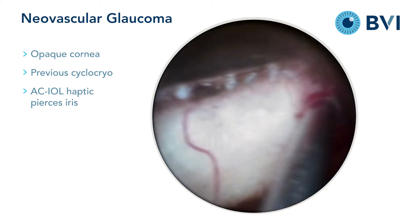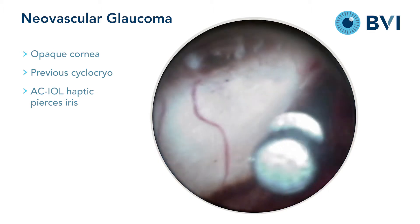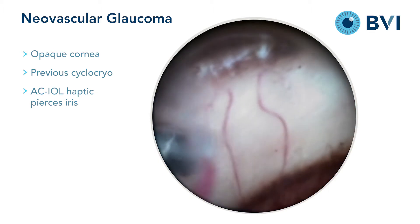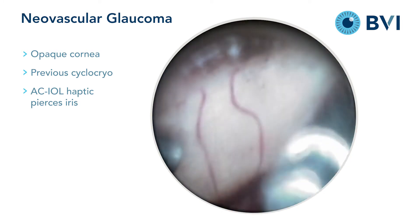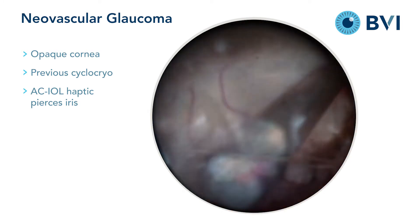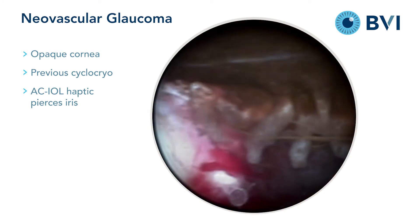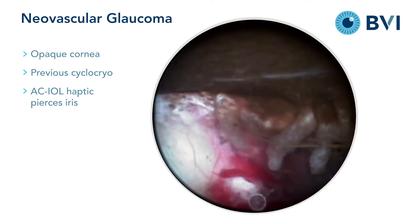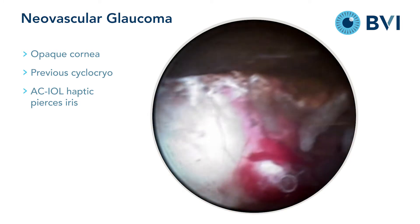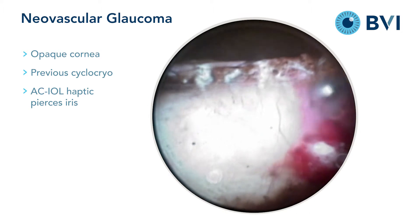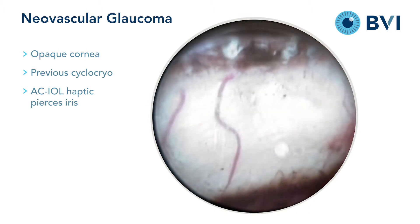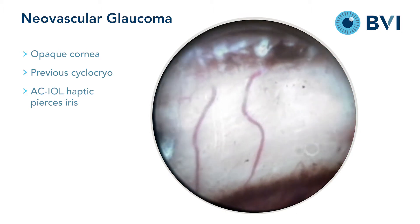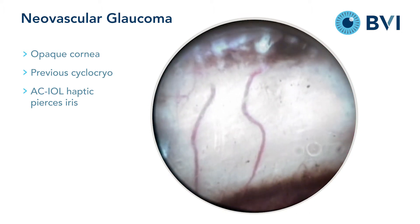Here we can see previous zones of cyclocryotherapy with adequately treated ciliary processes and completely missed processes. The border between treated and untreated areas are quite clear.